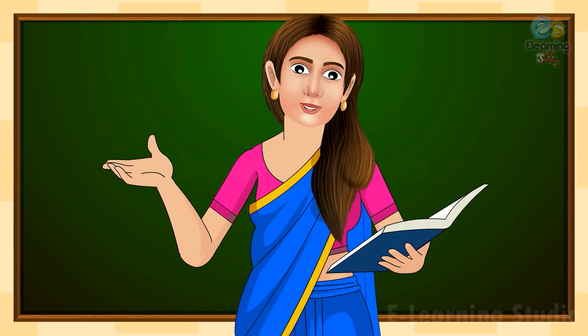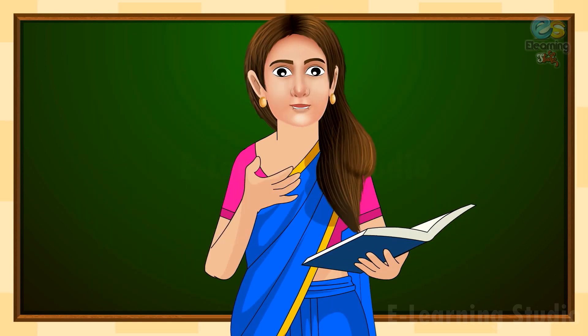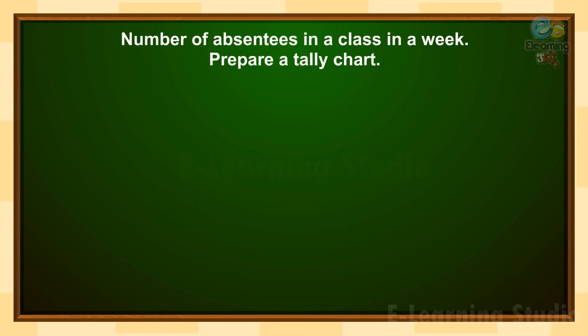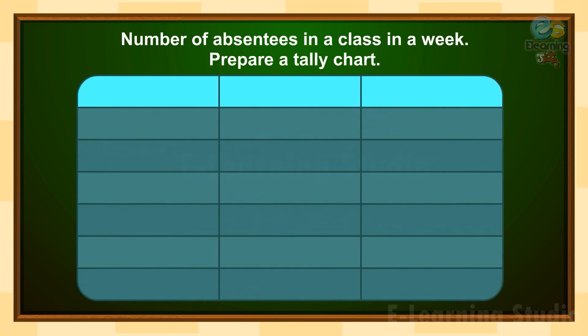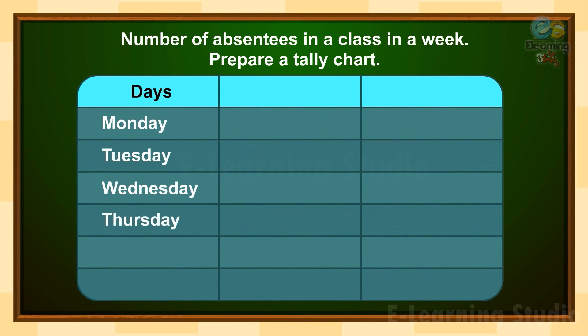Let's take an example to understand tally marks more. In this example, the number of absentees in a class in a week is given, and we will prepare a tally chart according to the given information. Here I have written the names of the days: Monday, Tuesday, Wednesday, Thursday, Friday, Saturday, and in the second column, the absentees numbers.